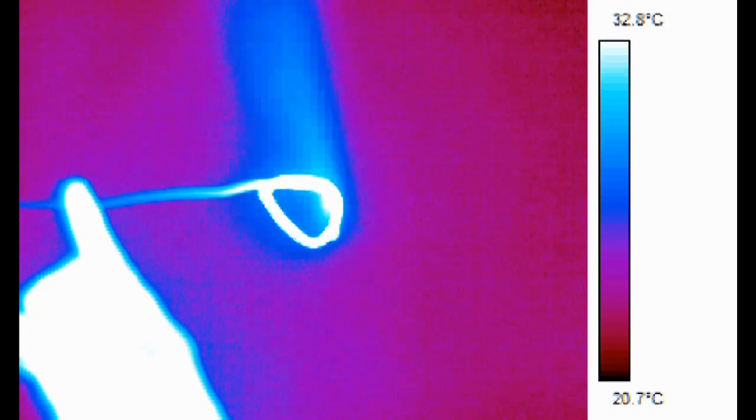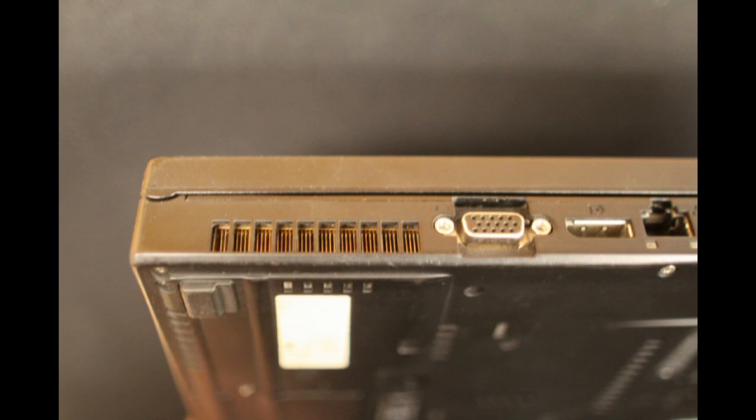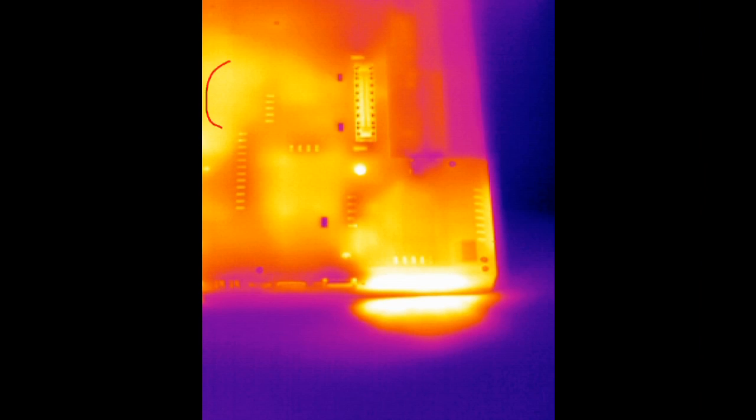Sometimes natural convection isn't fast enough, so engineers will use forced convection. Your computer uses forced convection to keep itself from overheating. That's what your fans do. Using the thermal camera, we can see that this laptop has several hot components.